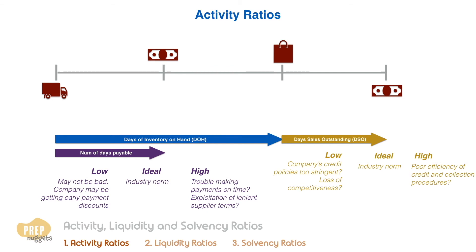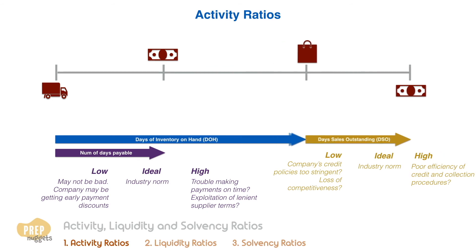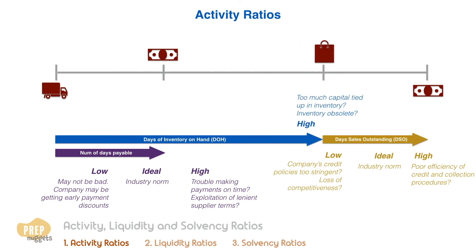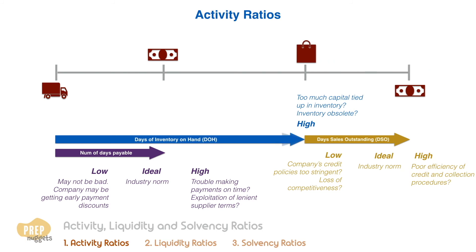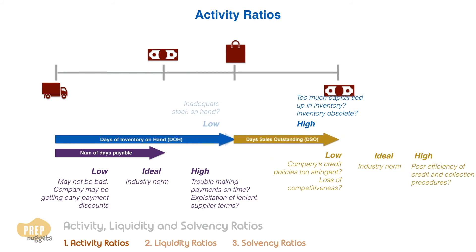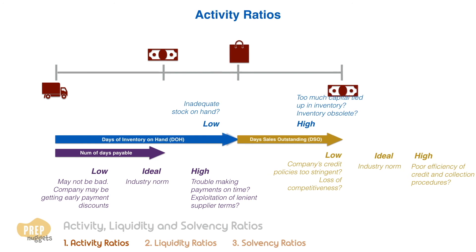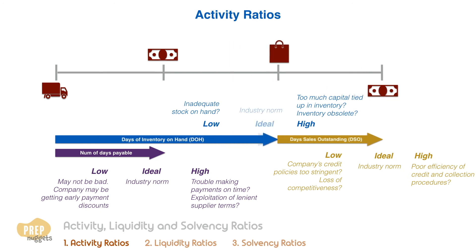Similarly, days of inventory on hand that is too high might mean that too much capital is tied up in inventory, and could mean that the inventory is obsolete. Conversely, a period that is too low might indicate that the firm has inadequate stock on hand, which could hurt sales. So what is desirable? Somewhere close to the industry norm.